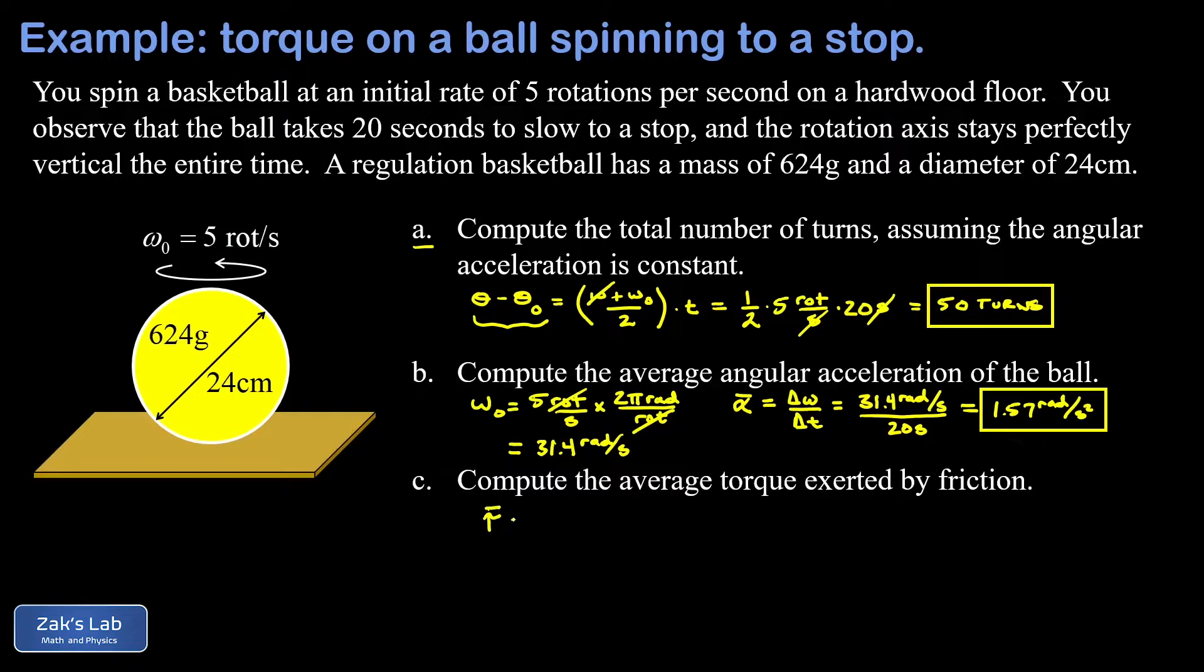This is the rotational equivalent of Newton's second law: torque equals moment of inertia times angular acceleration. So we need to plug in the formula for the moment of inertia of a hollow ball, because the basketball is a hollow ball. So that's two-thirds mr². I'll post a link to a video where that's derived using calculus.